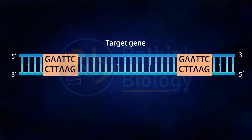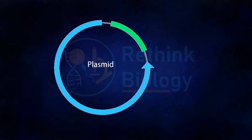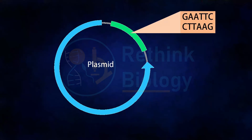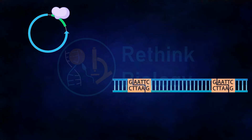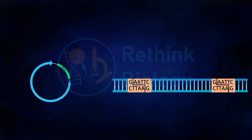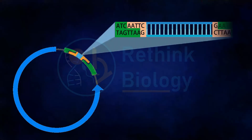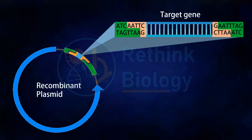The principle is simply that if two different DNA molecules are cut with the same restriction endonucleases, both will produce fragments with the same complementary sticky ends, so they can be joined together, which makes it possible for the formation of recombinant DNA. This is why restriction endonucleases are a very important tool for genetic engineering. Examples of such enzymes are EcoRI, HindIII, BglII, SalI, etc.